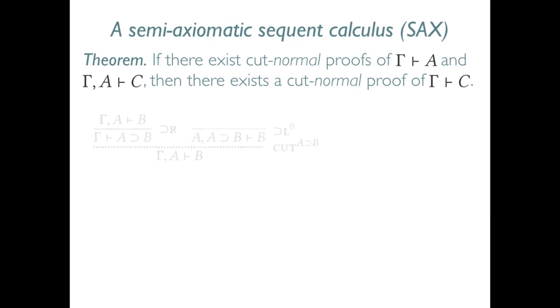The principal case for implication now happens when the right rule meets our new left implication axiom. We must find a cut normal proof of gamma A turnstile B. But that's easy. It's just the subderivation that we already have.